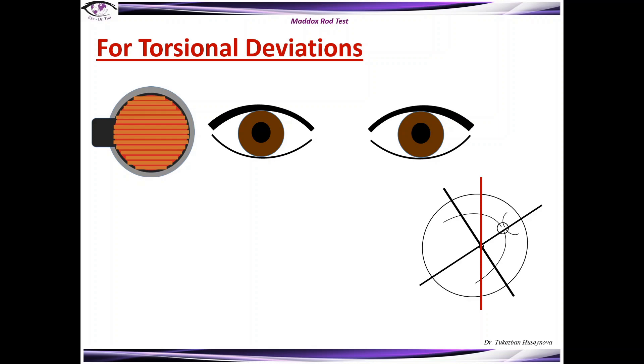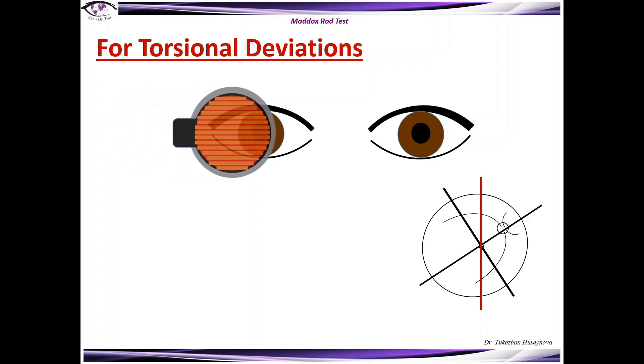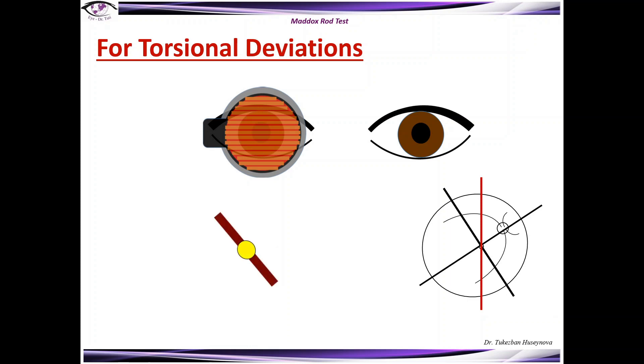There might be the situation when you put the red glass horizontally and you expect the patient to see the vertically directed red line, but instead the patient says that he sees neither vertical nor horizontal line.